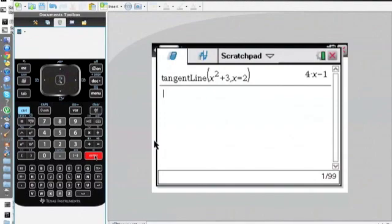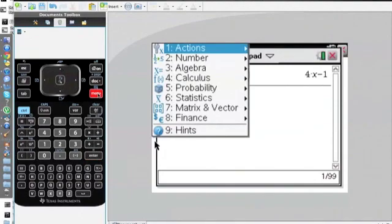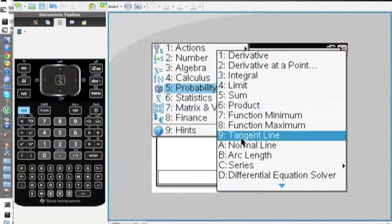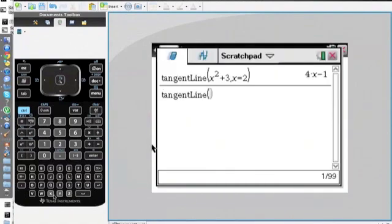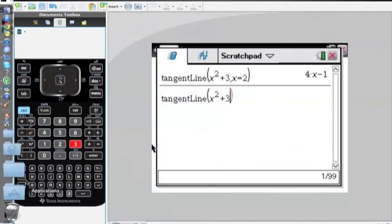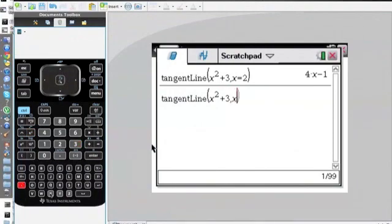Let's say if you're not sure if this works in the correct way, we're going to check it. We're going to go to menu, go to calculus, go back to tangent line, and I put in the same equation x squared plus three. I'm going to do comma and x equals zero.